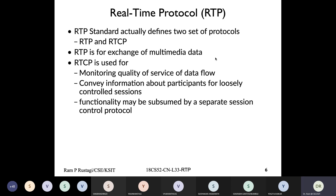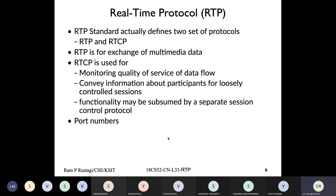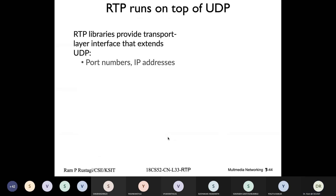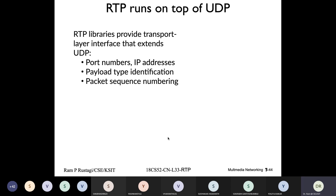Both RTP and RTCP run together. RTP always uses an even port number and RTCP uses the next port number. For example, if the RTP stream is using port number 5000, then RTCP would use port number 5001. Both make use of UDP as the underlying protocol. We need payload identification — what kind of audio, video, or multimedia data it is — since even for audio there could be different encodings.